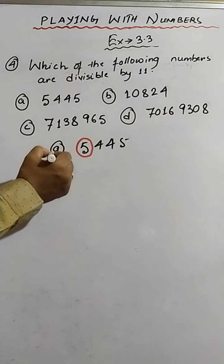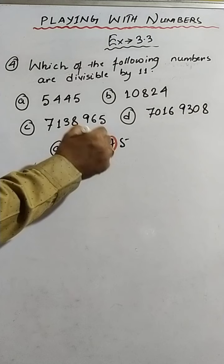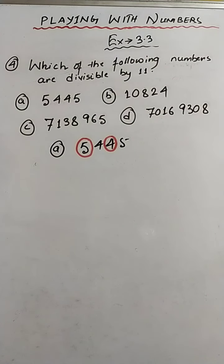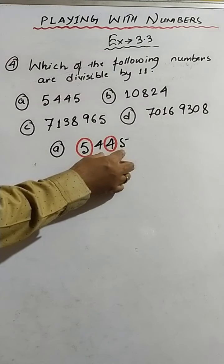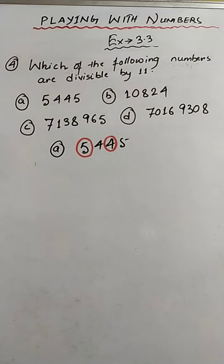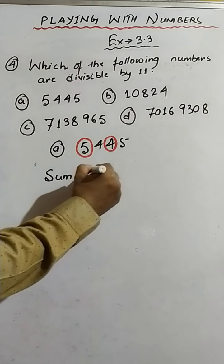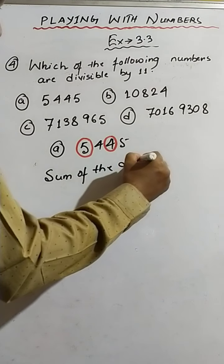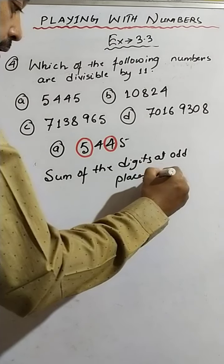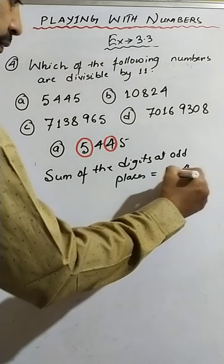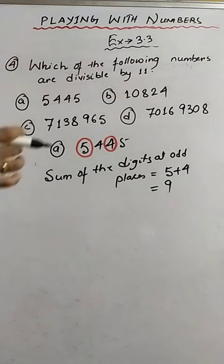Position 1 is 5, and position 3 is 4 — these are the digits at odd places. The digits which are not encircled are at even places. So the sum of the digits at odd places: 5 plus 4, that is 9.